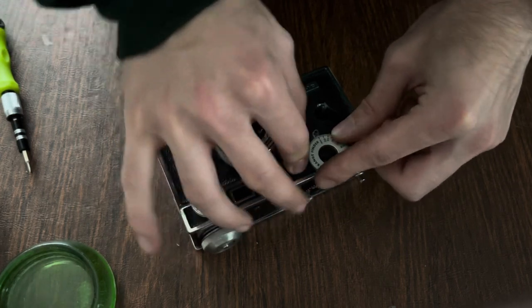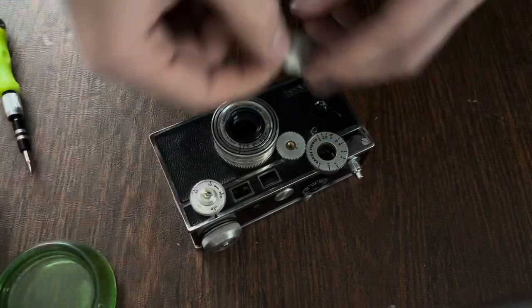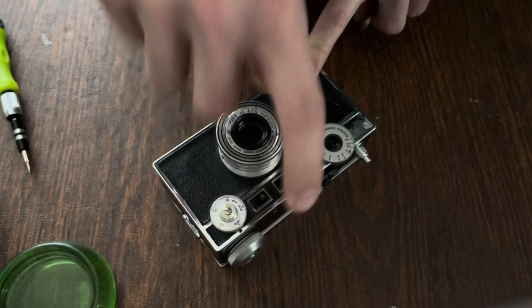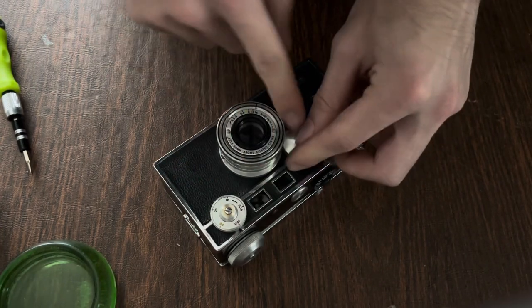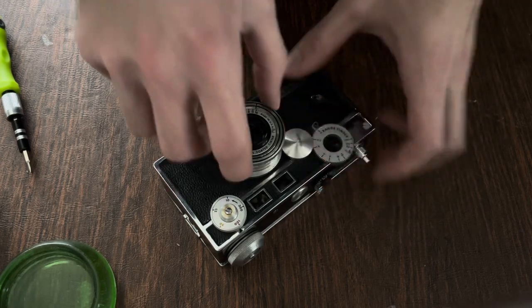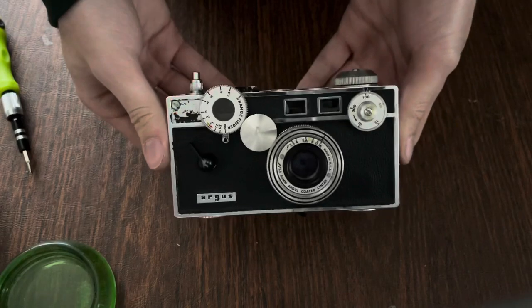Replace the gear there and then the rangefinder is back in synchronization. Finally, rotate this all the way counterclockwise until it stops, replace the thumb screw, and you have the cleaned lens.